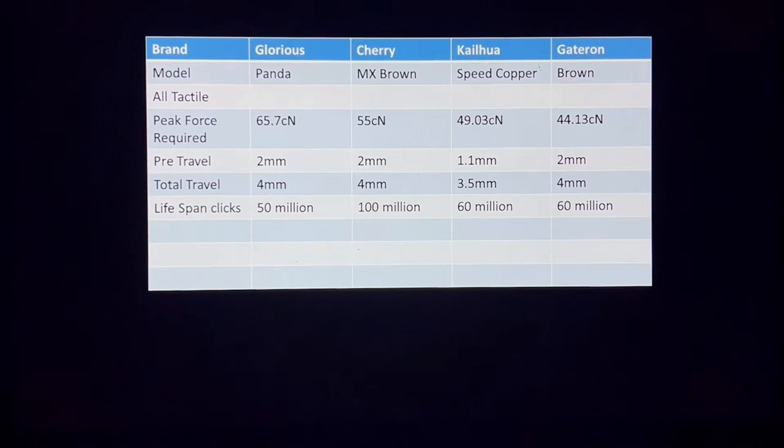Before we get into swapping out all the switches individually, I want to pass along some basic information about the switches themselves. So the first one we have here is the Glorious Panda. Its peak force is 65.7 centi-newtons, which is equivalent or very similar to grams force. I applied the conversions so that they would all have to be the same and they came out to be effectively the same. The pre-travel distance and the total travel. So pre-travel is how much it takes to get to an actuation point, while total travel is where the switch bottoms out. And then the lifespan of 50 million clicks.